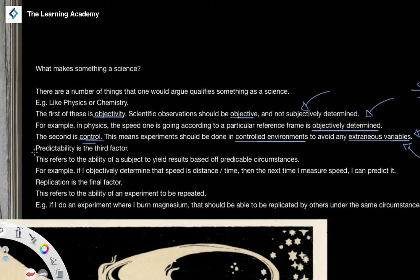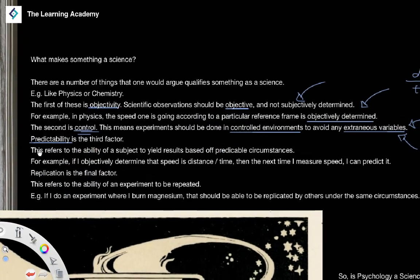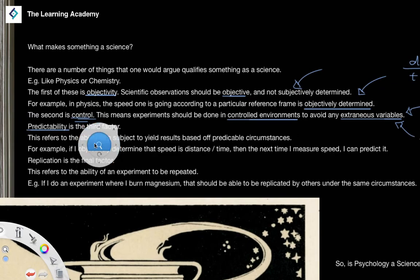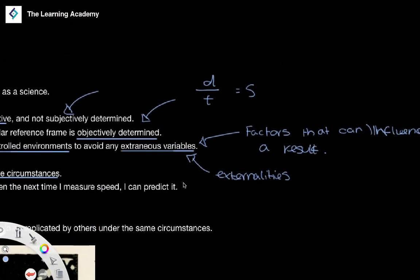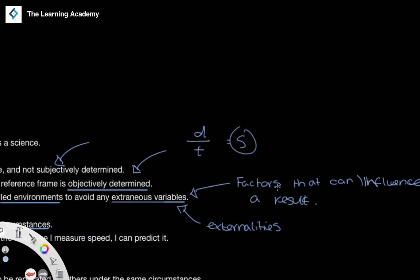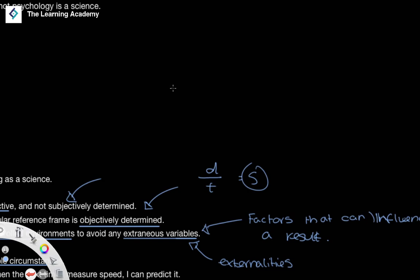The third factor is the concept of predictability. And this refers to the ability of a subject to yield results based off predictable circumstances. So, for example, if I wanted in physics to measure somebody's speed, I can determine that speed is equal to distance divided by time. And if I know these two factors, I will always be able to tell what speed a particular person is going.